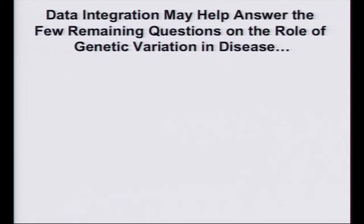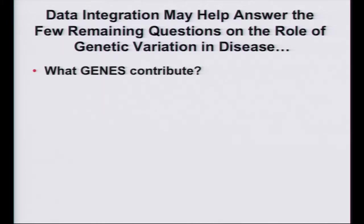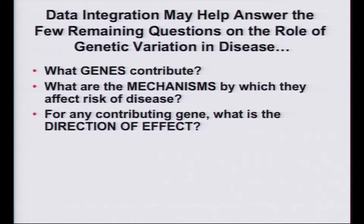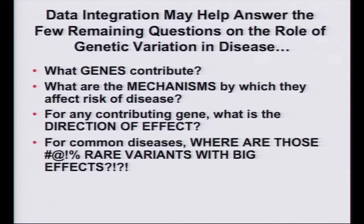I think data integration is one of those things that is extremely helpful in getting us to just the few remaining questions we have on the role of genetic variation in disease — like what are the genes, what are the mechanisms, what are the directions of effects, and where are those rare variants?